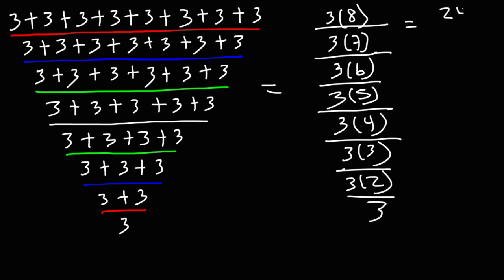So three times eight is 24. Three times seven is 21. Three times six is 18. And then you can see the pattern. It's just decreasing by three.